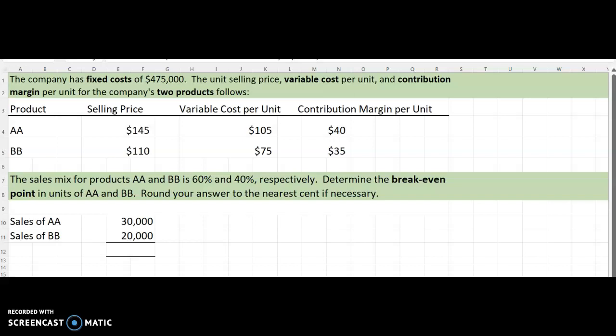So we already know that in order to calculate break-even, what we have is a shortcut where we can say fixed costs as our numerator divided by our denominator. So if we wanted units, we would say fixed costs divided by contribution margin. Well, if we sell more than one product...